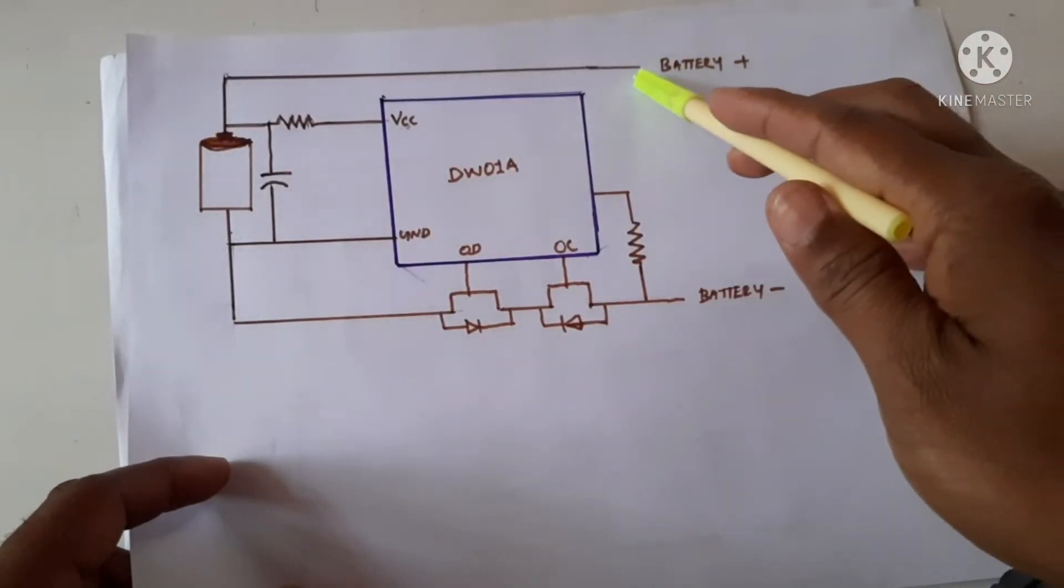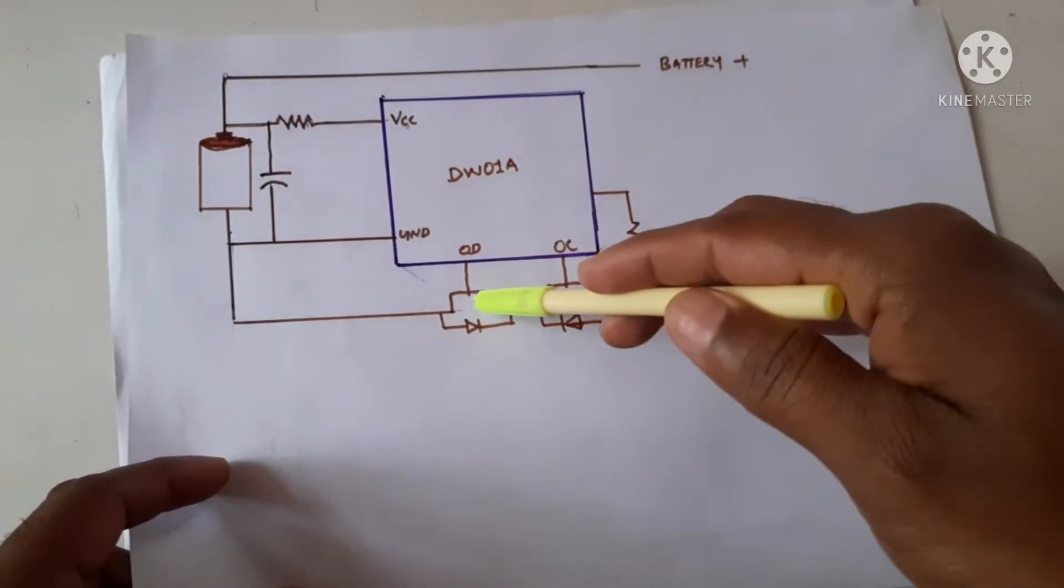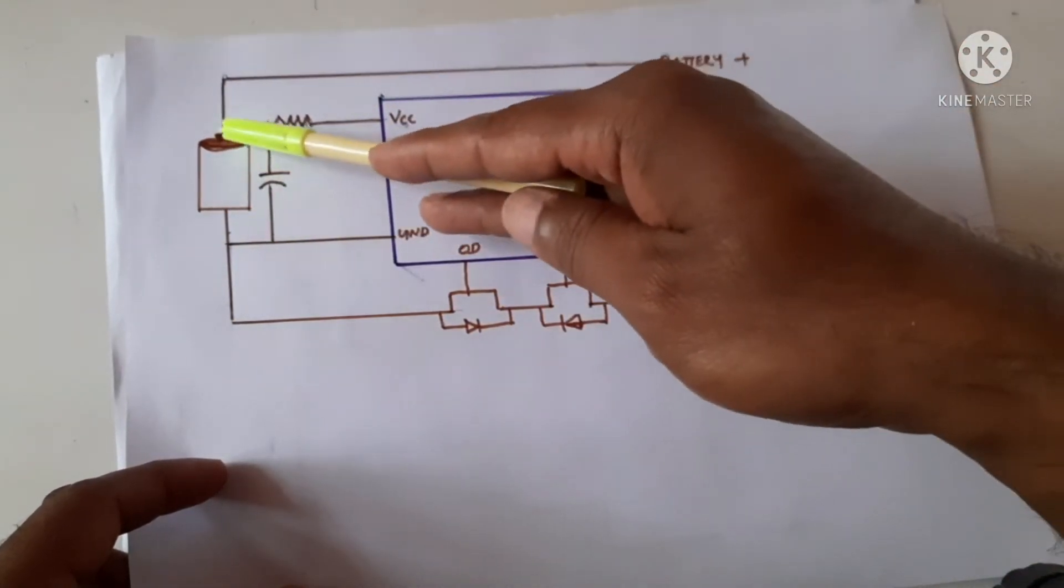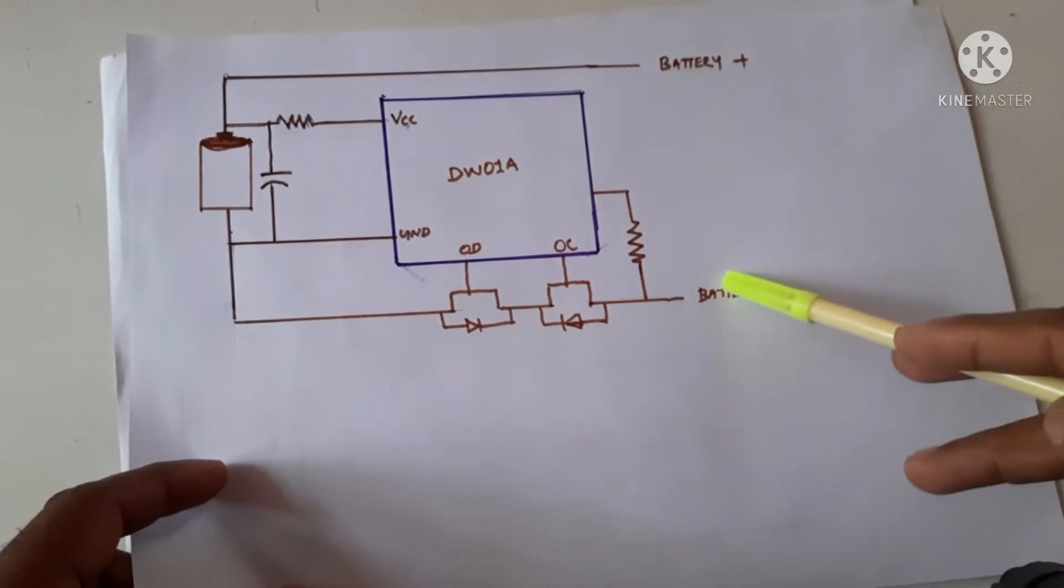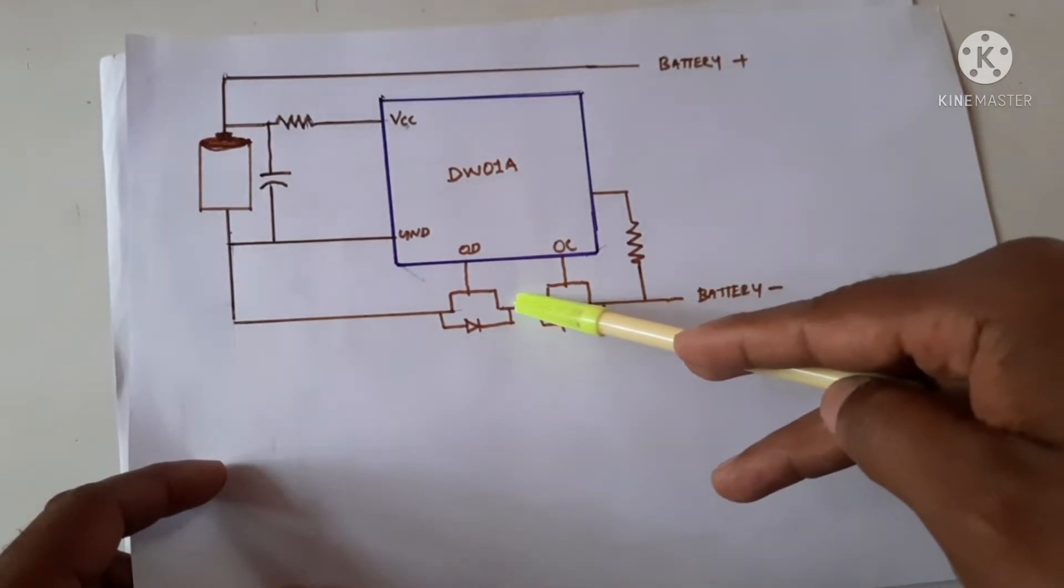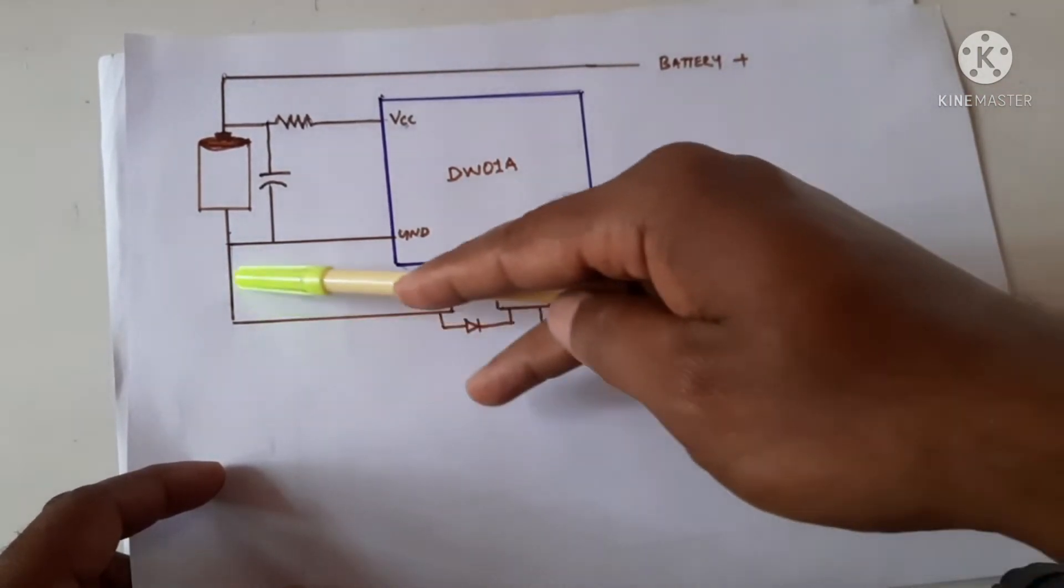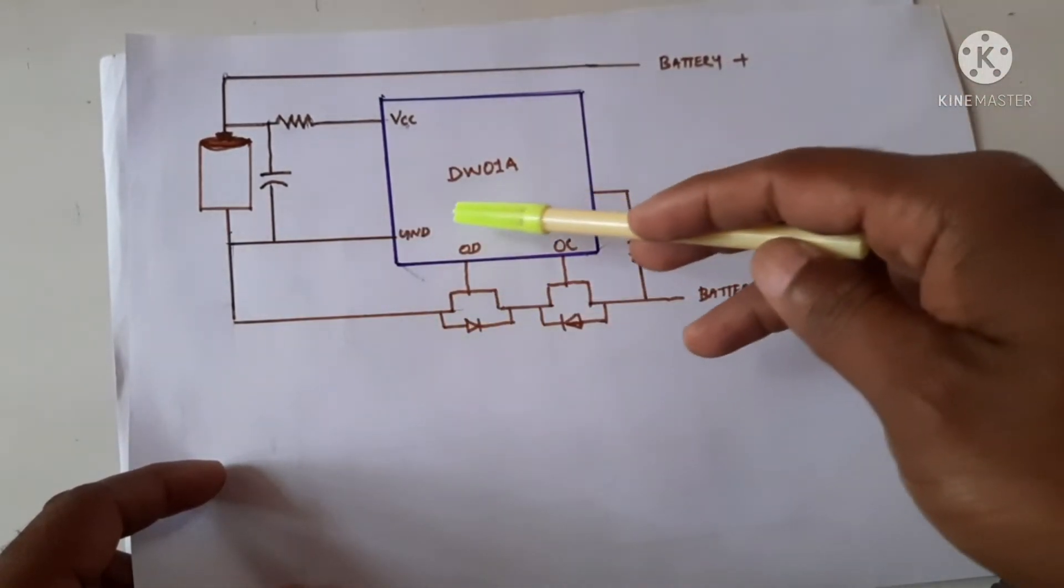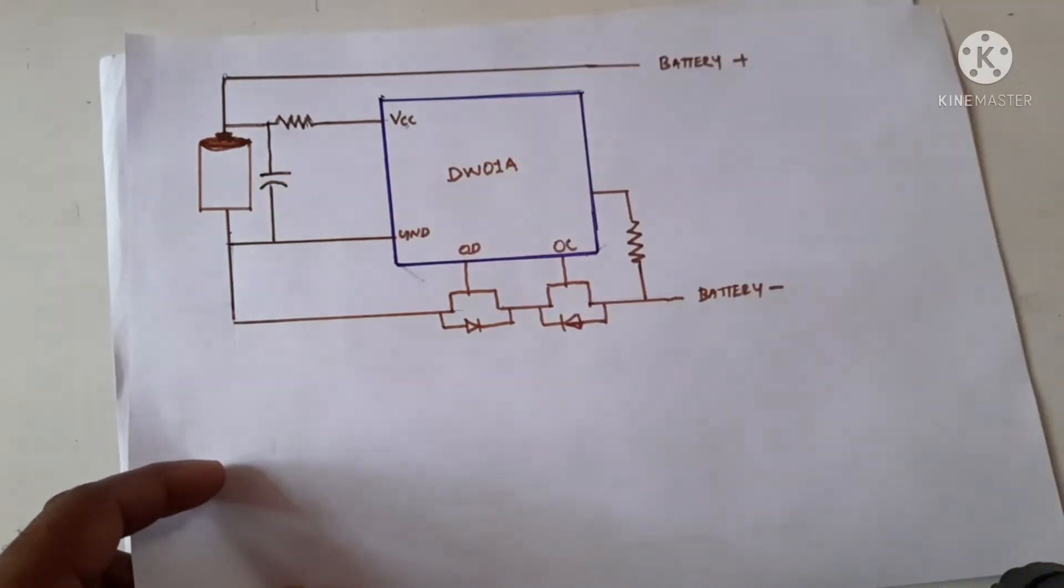If we connect a load across this and if this part is off the current will not flow. The current comes here and this is closed, so it will not be connected with the negative side of the battery. So over discharge also gives protection.